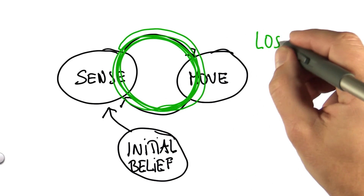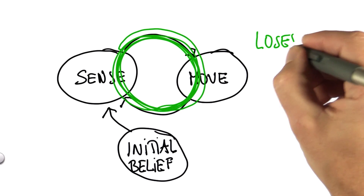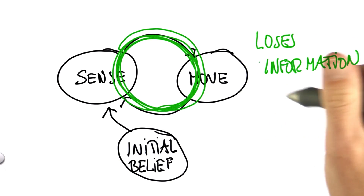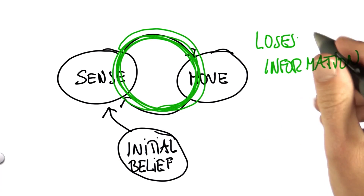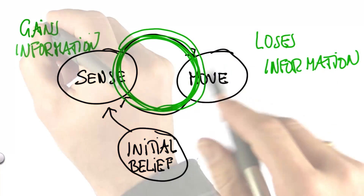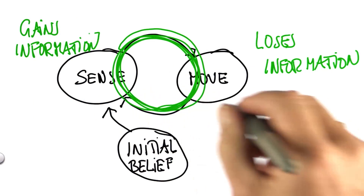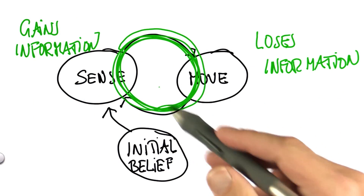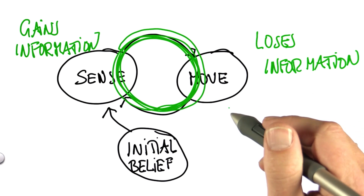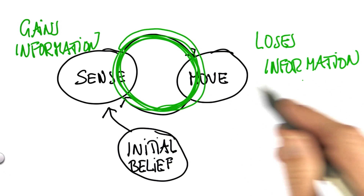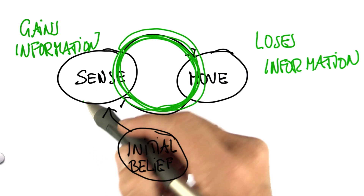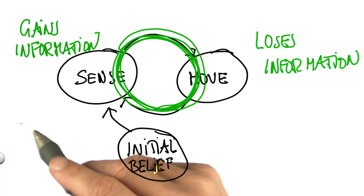Every time the robot moves, it loses information — that's the way it is. That's because robot motion is inaccurate. And every time it senses, it gains information. That is manifested by the fact that after motion, the probability distribution is a little bit flatter and more spread out. And after sensing, it's focused a little bit more.